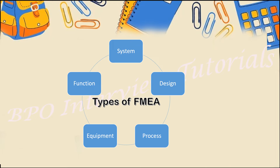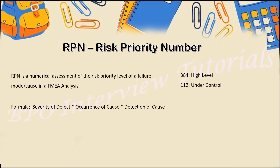Let's see what are the types of FMEA. We can do System FMEA if there is a failure identified in the system; Design FMEA if the failure is in the design; Process FMEA; Equipment FMEA; and Function FMEA. These are the five types of FMEA. You need to decide where the failure is occurring and which type to work on. You prepare a pre and post plan and analyze the impact. Now, I also want to introduce RPN, which is also a part of FMEA.